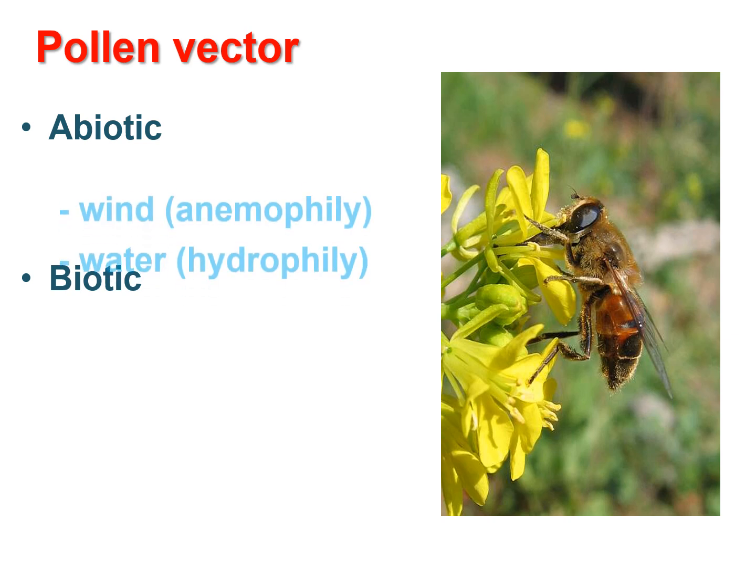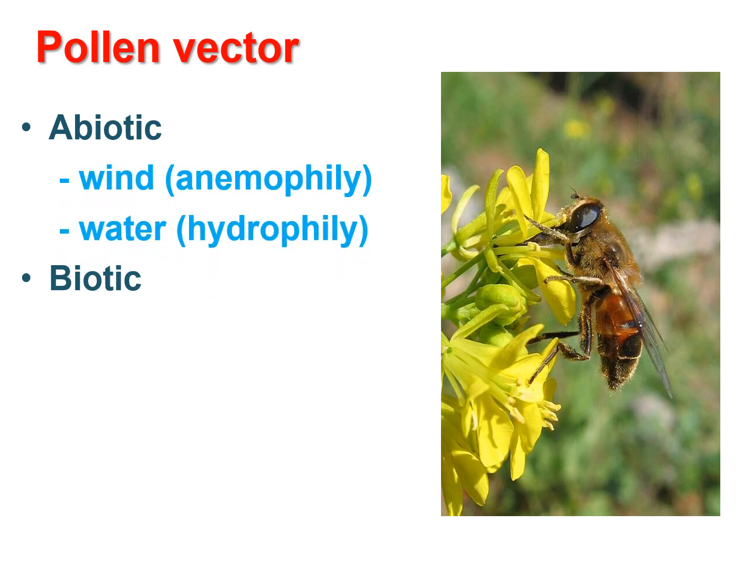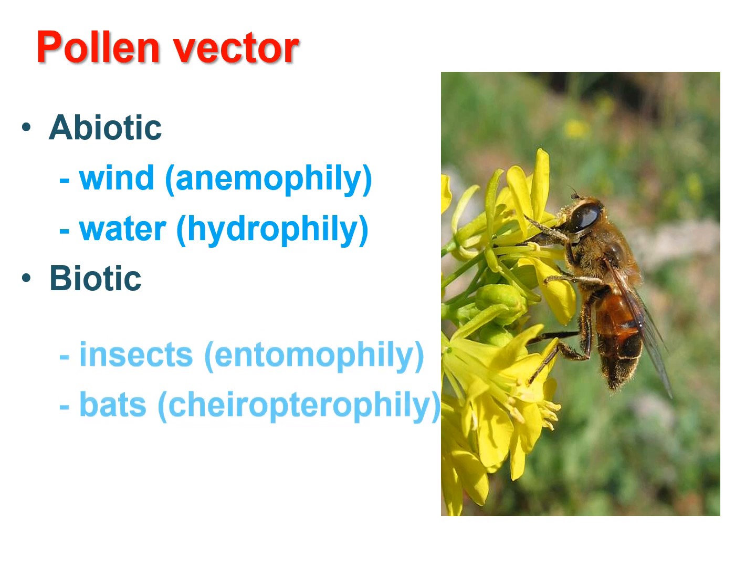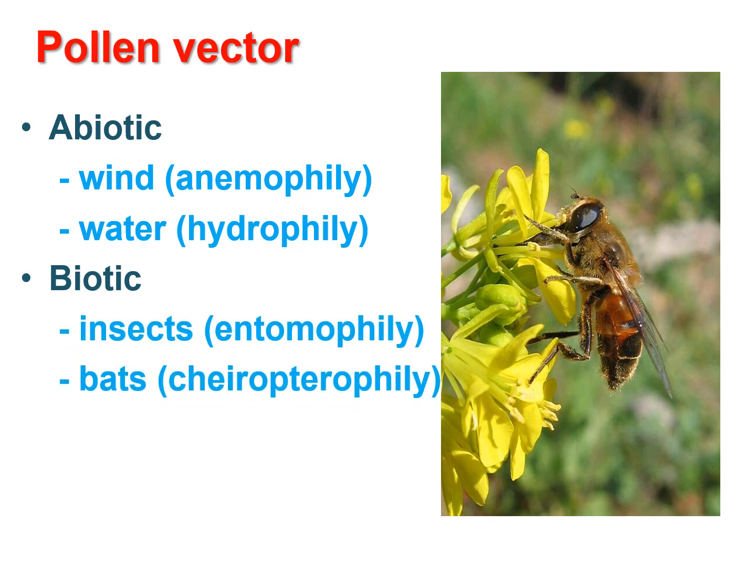Pollen vectors are classified as abiotic or biotic. Abiotic vectors include wind (anemophily) and water (hydrophily). Biotic vectors include insects (entomophily) and bats (chiropterophily).